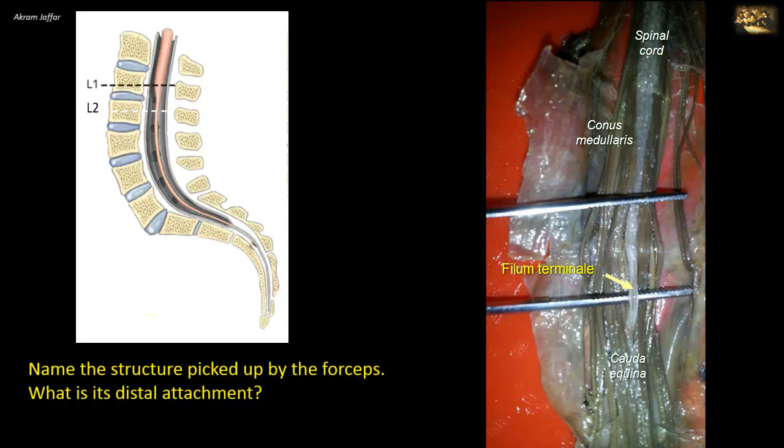The filum terminale is a vestige of the spinal cord of the embryonic tail, and it picks up a dural investment opposite the second sacral segment. At the second sacral segment, the subarachnoid space ends, so the dura mater covers the filum terminale and the resulting structure is called the coccygeal ligament. The coccygeal ligament extends from the level of S2 and is attached to the dorsum of the coccyx.